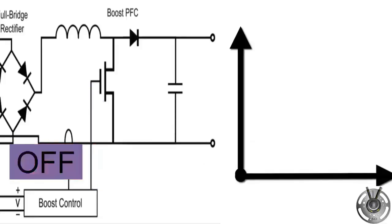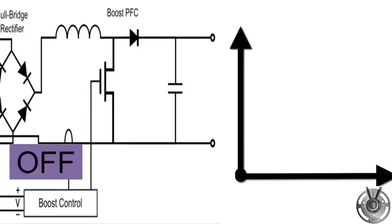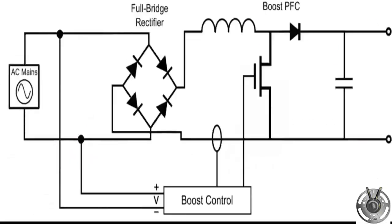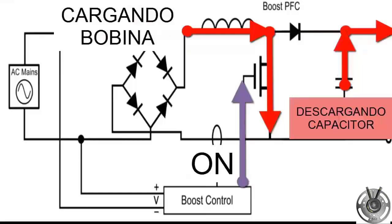When the IGBT transistor turns off, the energy stored in the reactor is released, helping to maintain a constant and smooth current flow, which is the energy required by the system.